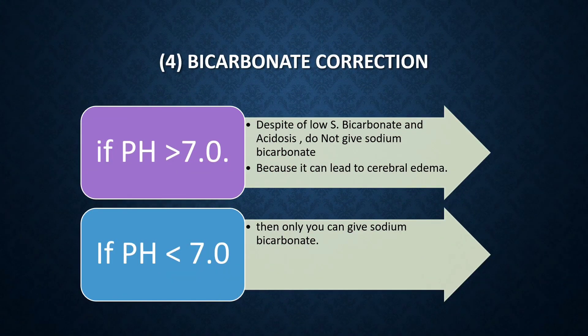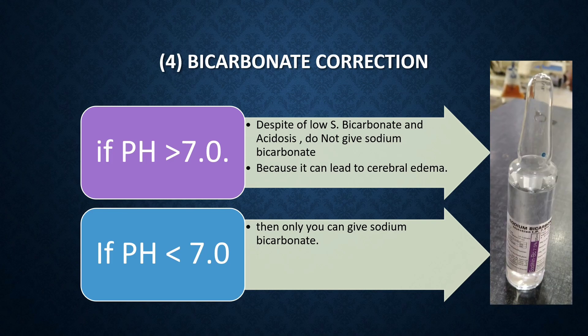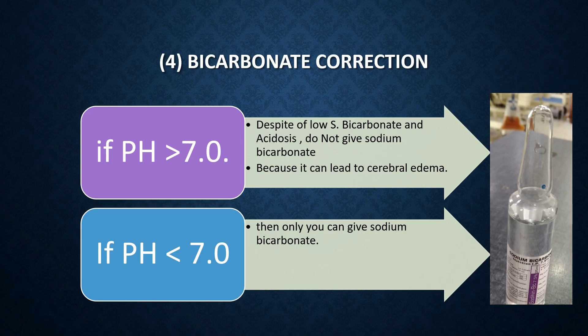The fourth important step is bicarbonate correction. Bicarbonate correction is usually not required because it is corrected when you replace fluids and give IV insulin. If serum pH is more than 7, do not give sodium bicarbonate despite low serum bicarb and acidosis, as it can lead to cerebral edema. Give sodium bicarbonate replacement only if pH is less than 7 on arterial blood gas analysis.